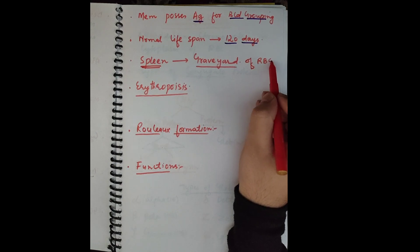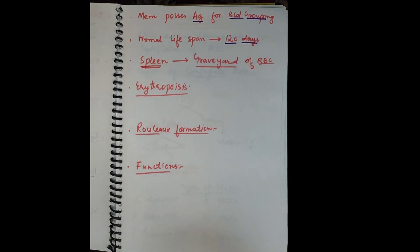Because RBCs are destroyed within the spleen, the spleen is called the graveyard of RBCs. All old RBCs are destroyed within the spleen because it possesses the narrowest capillaries of the blood.